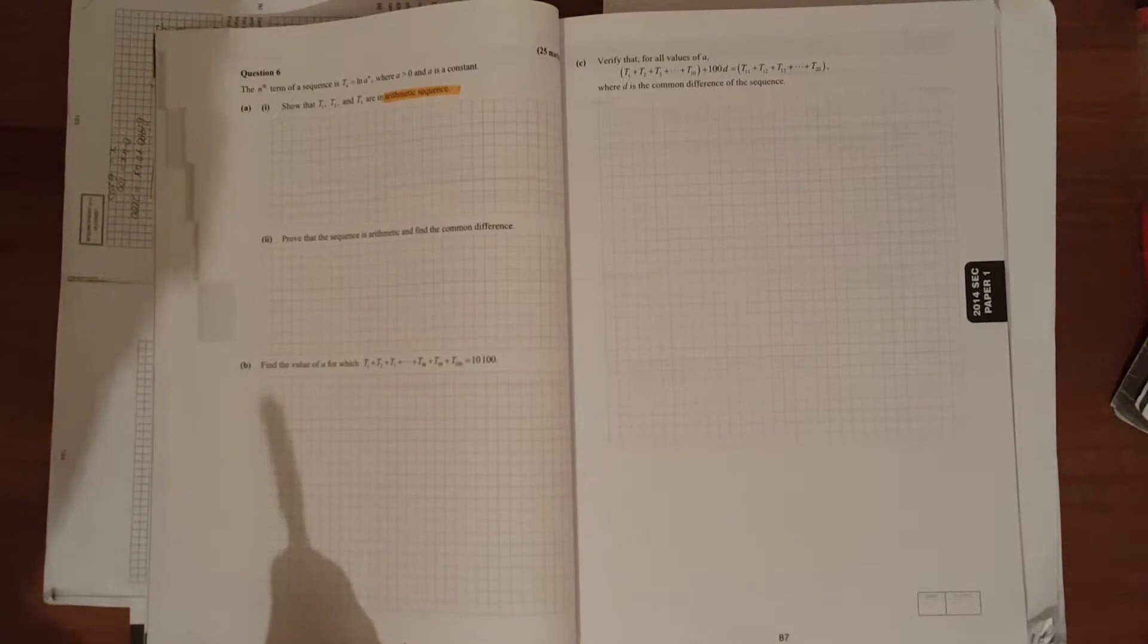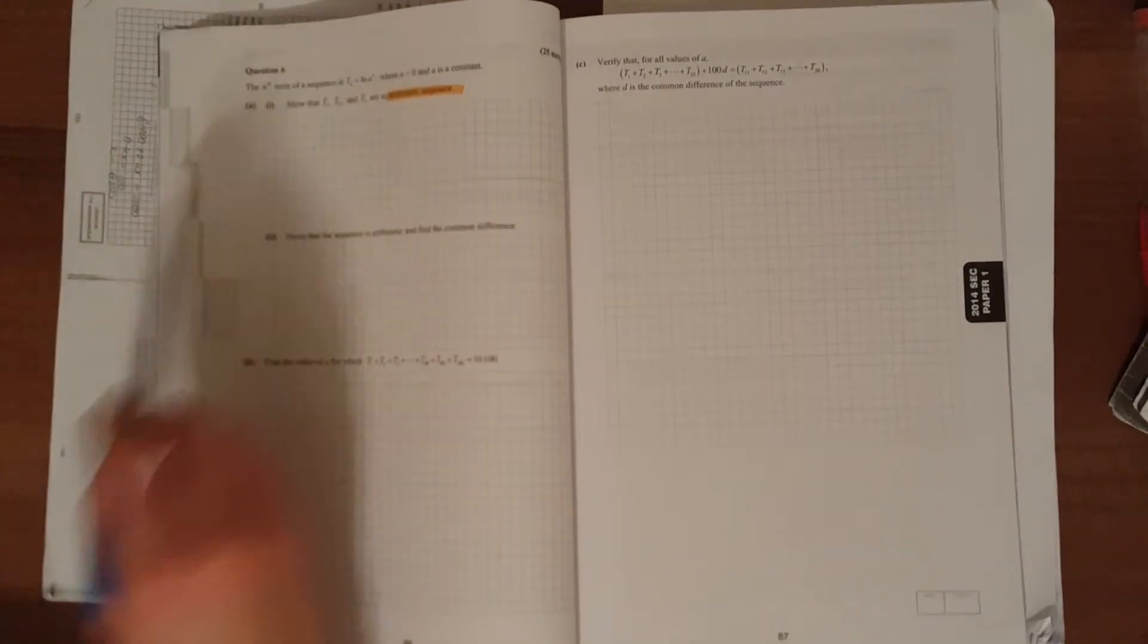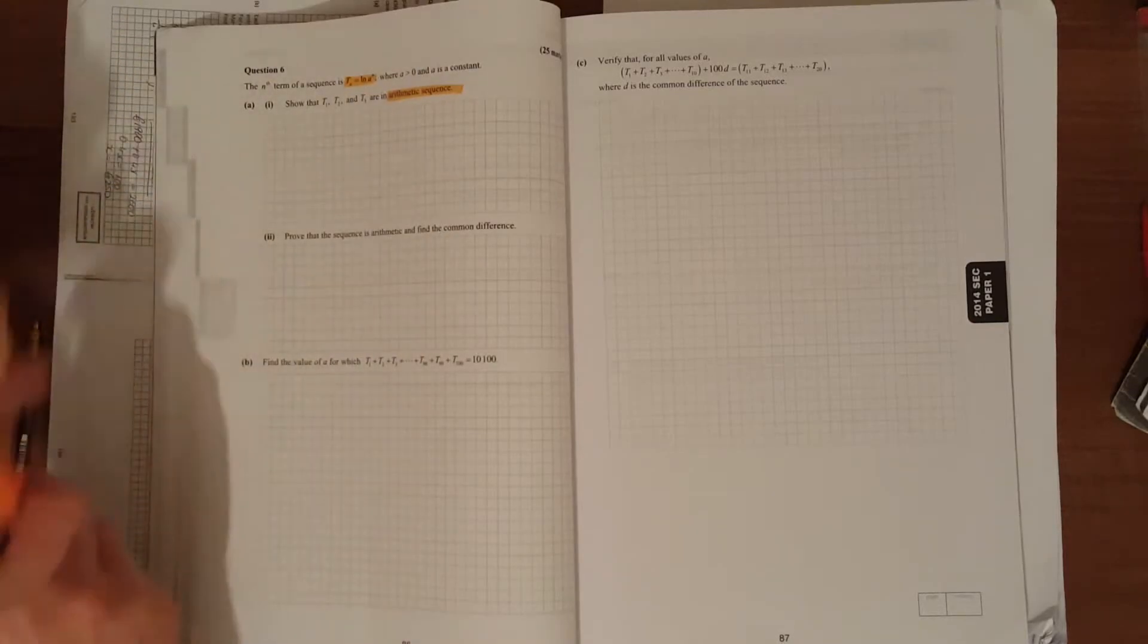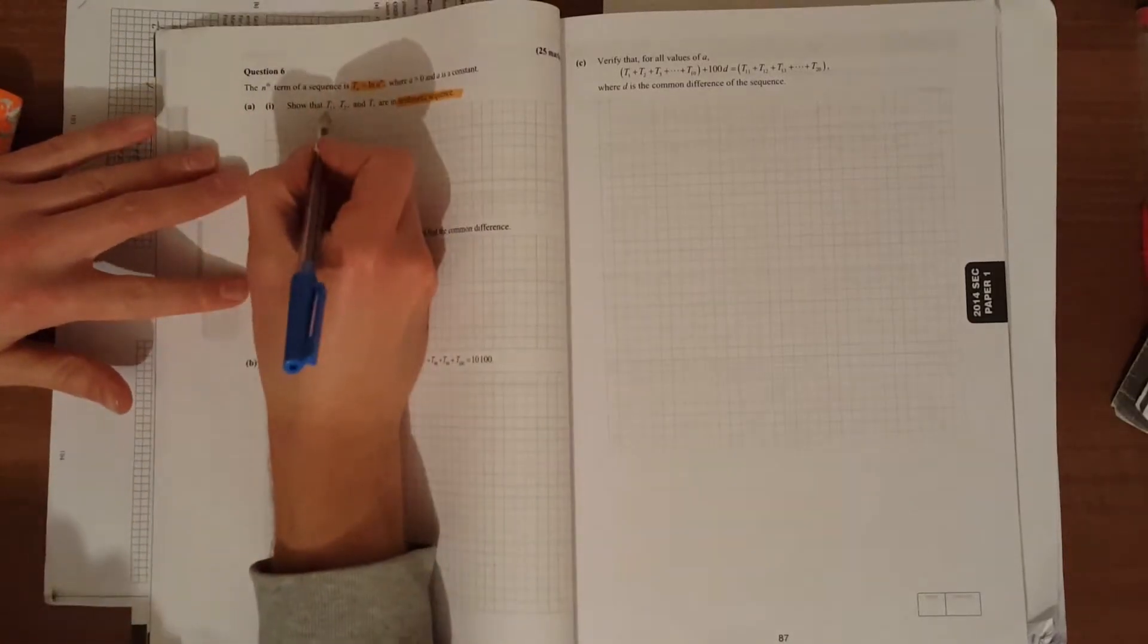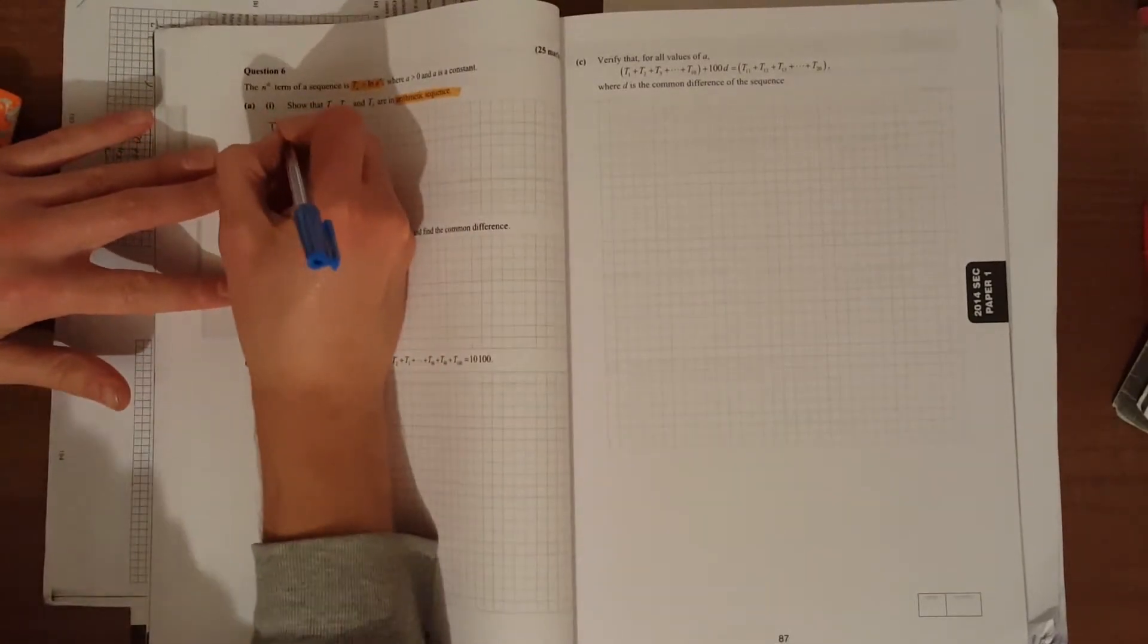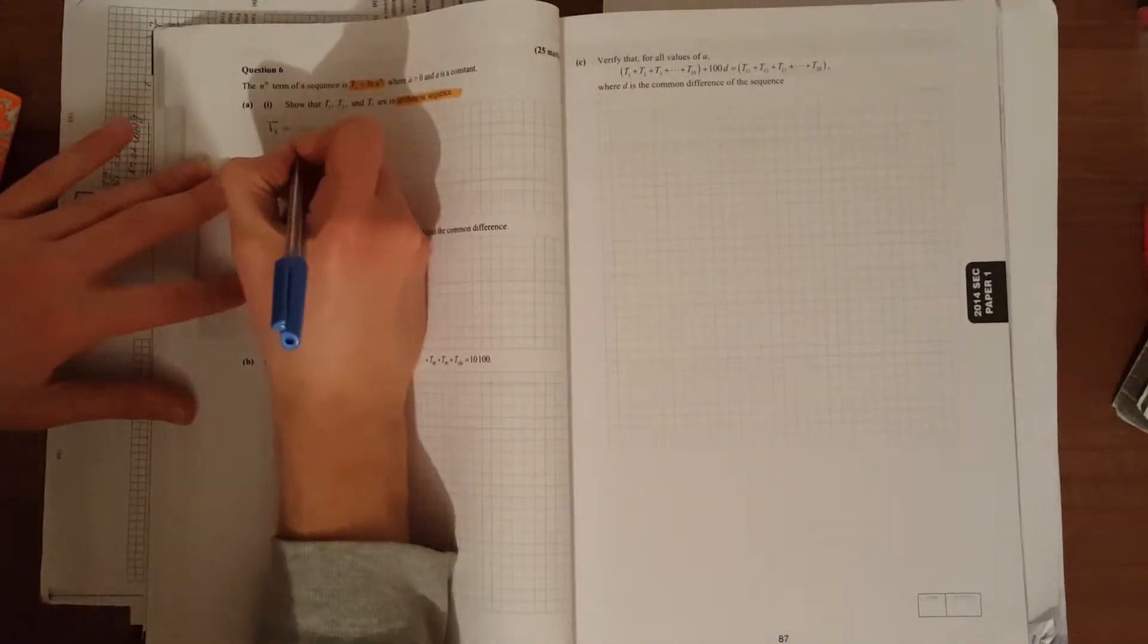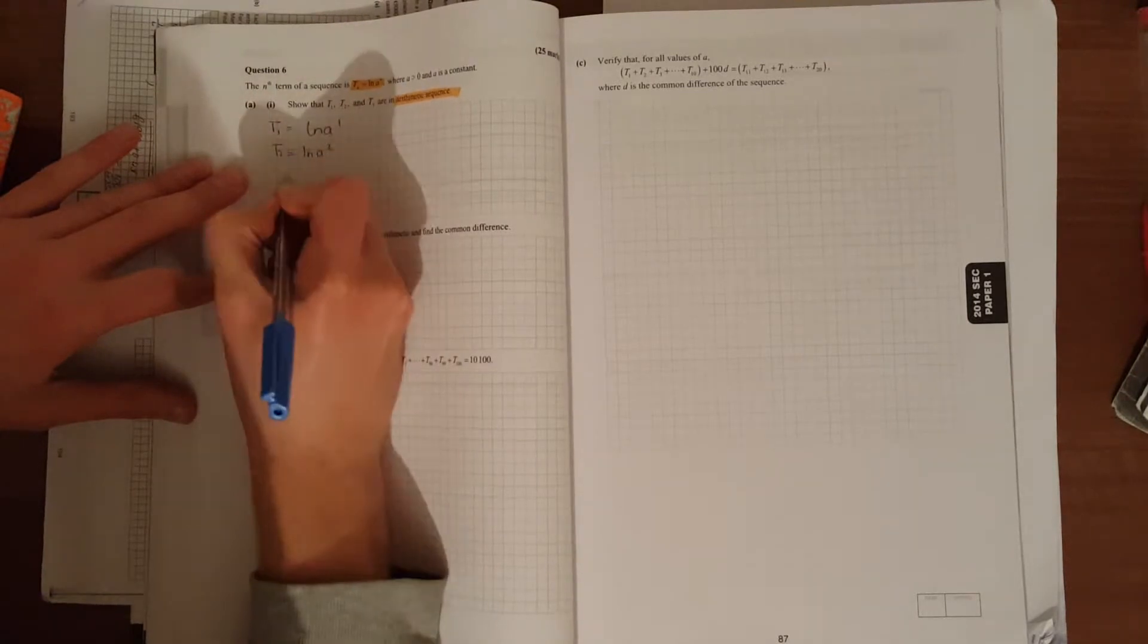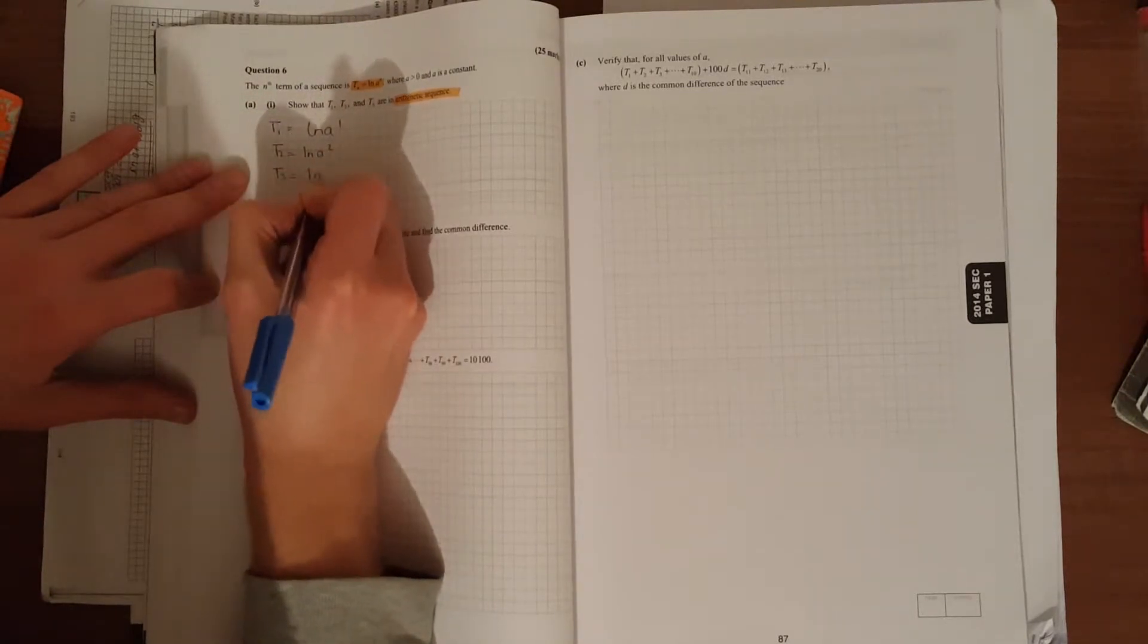Here they give us the general term tn = ln(a^n). First we'll work out t1, t2, and t3. t1 equals ln(a^1), t2 equals ln(a^2), and t3 equals ln(a^3).